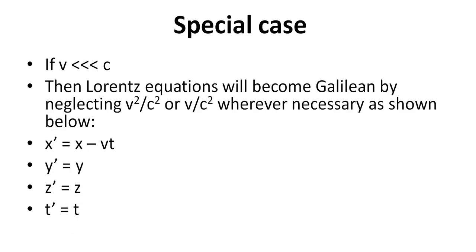Special case: if v is very much less than c, then the Lorentz equations reduce to the Galilean transformation equations by neglecting v²/c² or v/c² wherever necessary. That is: x' equals x minus vt; y' equals y; z' equals z; and t' equals t.